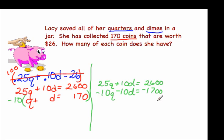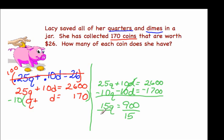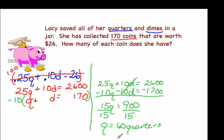Now we can combine these two equations together. Our d's cancel out, leaving us with 15q equals 900. When we divide 900 by 15 to get q isolated, we find out that we have 60 quarters. Once we know we have 60 quarters, it's easy to find how many dimes we have. We have 170 coins, and if 60 of them are quarters, then 110 of the coins must be dimes.